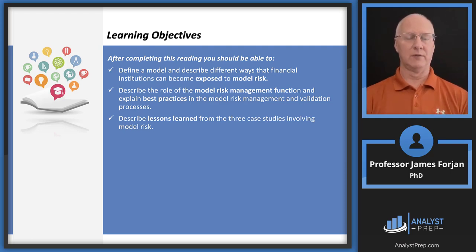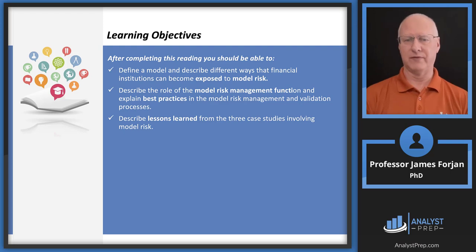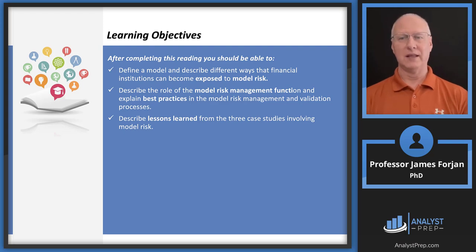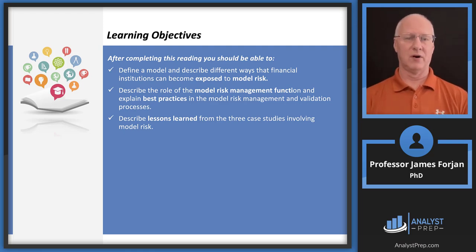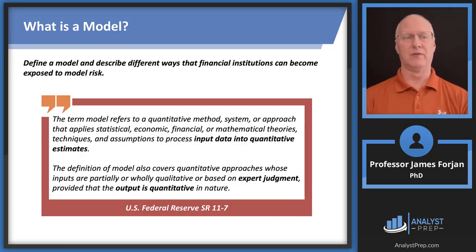We essentially have two learning objectives. The first two are almost one — exposure to model risk and the model risk management function, and then there's the term best practices. The last learning objective is a series of lessons learned: things like transparency, the responsibility of investors to become informed, and the reliance on all entities involved in the trading of options, futures contracts, mortgage-backed securities, bonds, and similar instruments. Mistakes made by one party we can all learn from, and we'll see that in a really cool example at the very end of this slide deck.